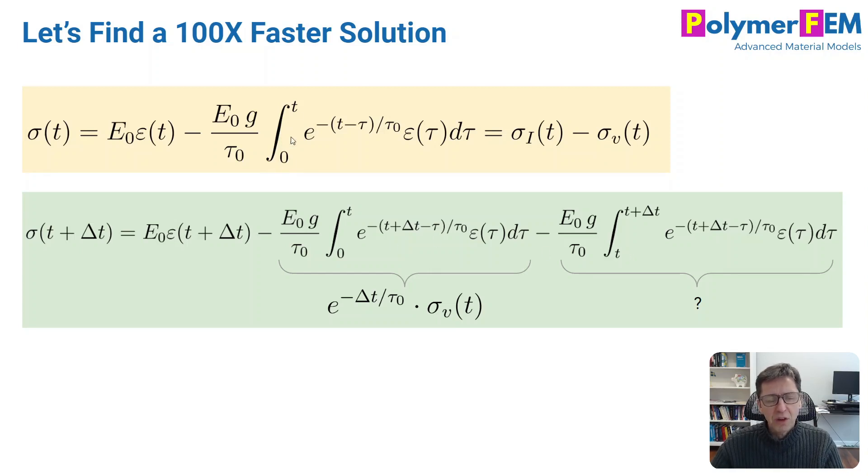And here's what's cool, right? Because an integral from zero to t plus delta t is the sum of two integrals: the integral from zero to t, and then an integral from t to t plus delta t. So you divide it into two parts here, and that's one of the key tricks in doing this.